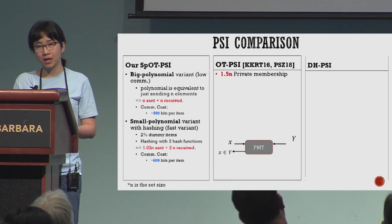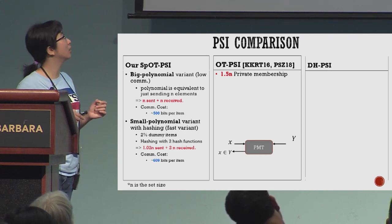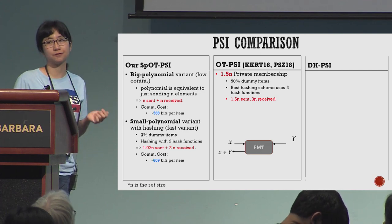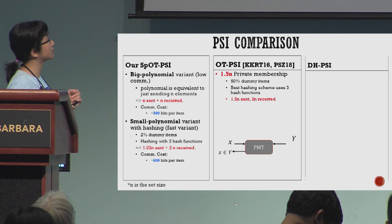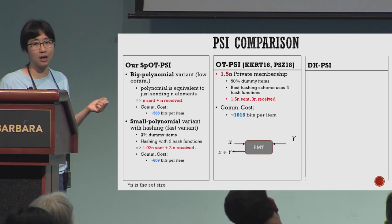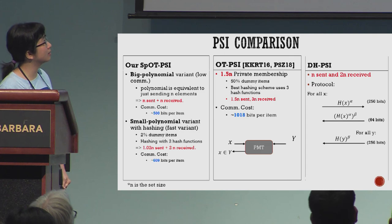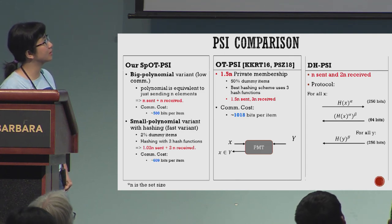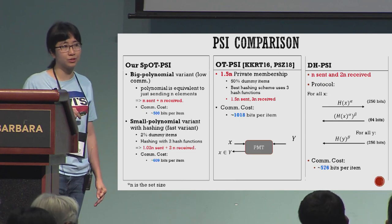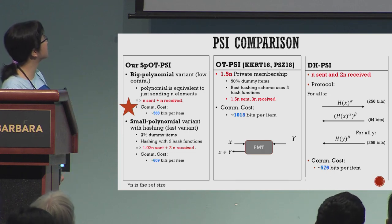Compared to OT-based PSI, their protocol needs to use about 1.5n private memberships, in which 50% are dummy items, and they need to use three hash functions. So it means they need 1.5n sent and 3n received. Their communication cost is about 1,000 bits per item. For Diffie-Hellman based PSI, they need n sent and 2n received, and their communication cost is about 576 bits per item, which is more than our protocol. We have the best communication cost.